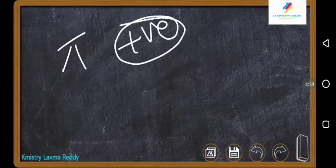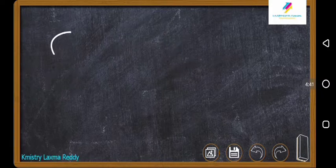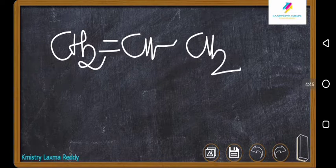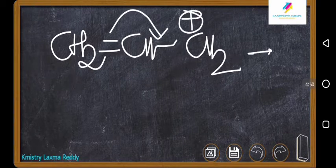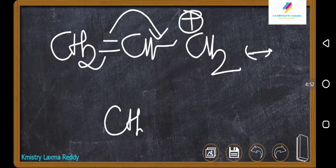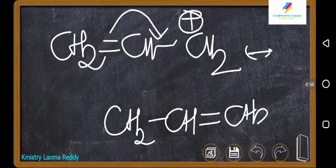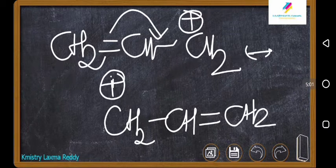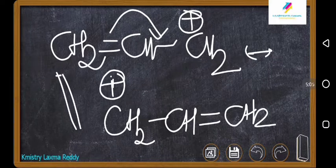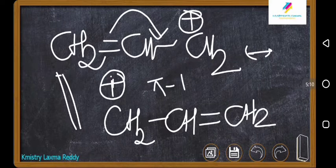The next type is pi and positive charge conjugation. The example is the allyl carbocation: CH2=CH–CH2⁺. The electron pair shifts here, giving CH2–CH=CH2 with the plus charge moving to the other carbon. Both structures are equally stable since both have a double bond and a plus charge in symmetric positions.